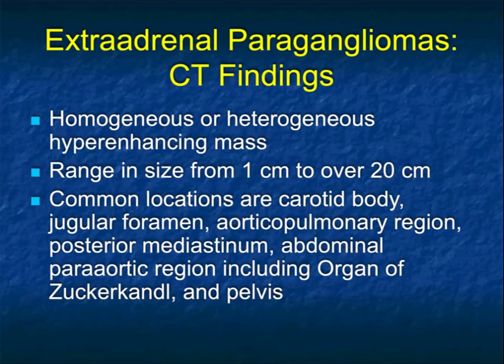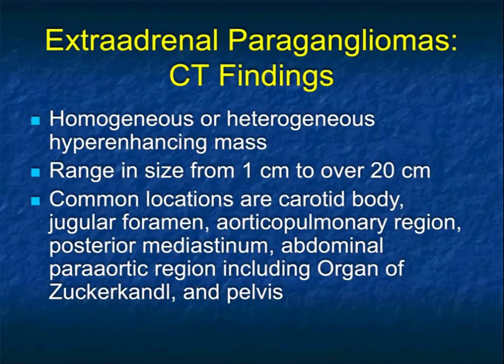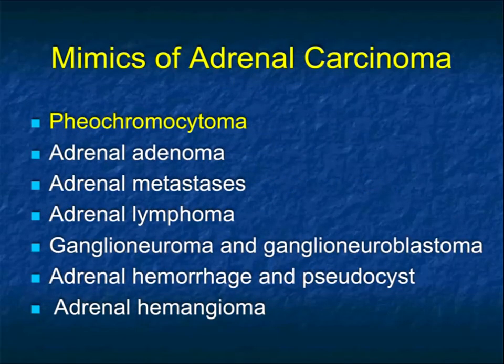Extraadrenal paragangliomas, which are extraadrenal pheos, are typically homogeneous or heterogeneous hyper-enhancing masses ranging from 1 to over 20 centimeters. Common locations include from the carotid body to the jugular foramen, the AP window, posterior mediastinum, in the abdomen particularly near the organ of Zuckerkandl, and in the pelvis including within the bladder.